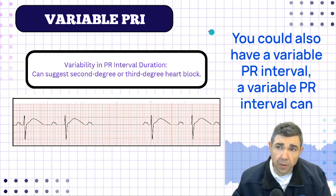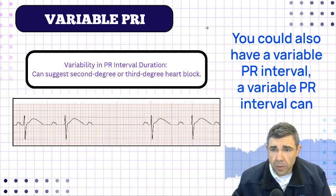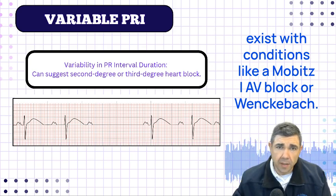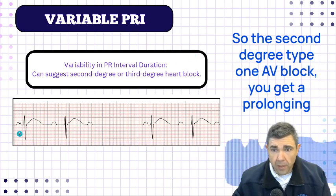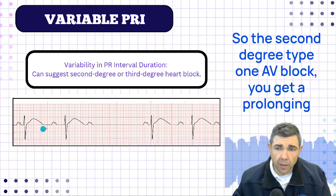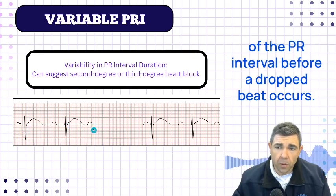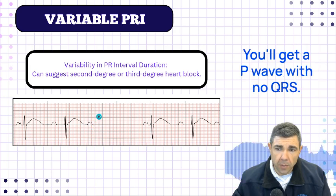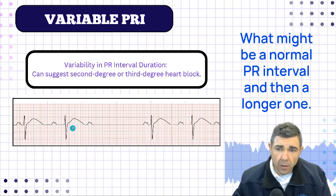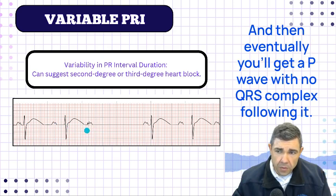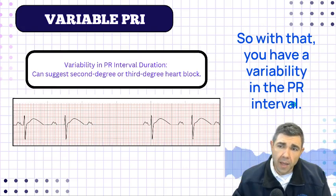You could also have a variable PR interval. A variable PR interval can exist with conditions like a Mobitz 1 AV block, or Wenckebach. With a second degree type 1 AV block, you get a prolonging of the PR interval before a dropped beat occurs — you'll get a P wave with no QRS. So you might have a normal PR interval and then a longer one, and eventually a P wave with no QRS complex following it, giving you variability in the PR interval.